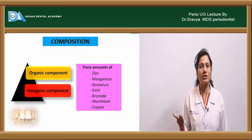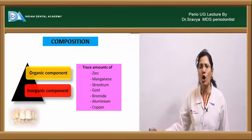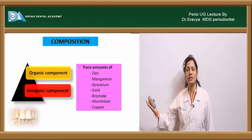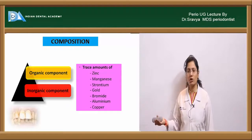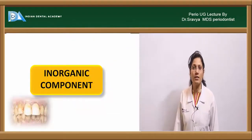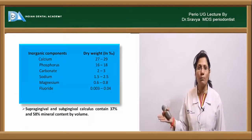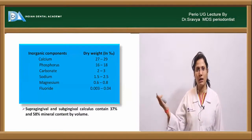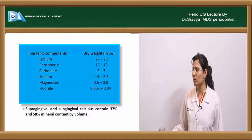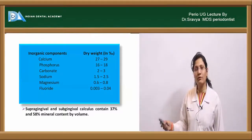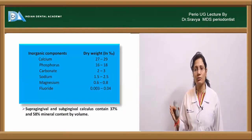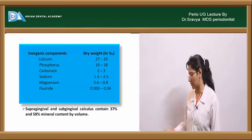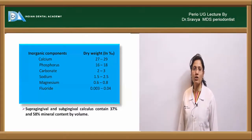The composition of calculus includes organic and inorganic components, plus trace minerals like zinc, magnesium, sodium, strontium, and bromide. The main inorganic component is calcium at 27–29%, followed by phosphorus at 16–18%, with carbonate, sodium, magnesium, and fluoride making up the rest. Supragingival calculus has a mineral content of about 37% by volume, while subgingival calculus is about 58% by volume — meaning subgingival calculus is more mineralized.